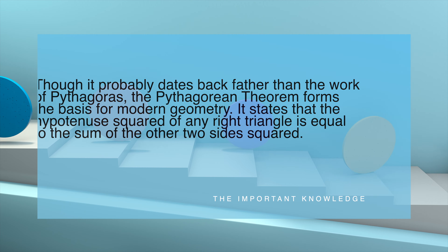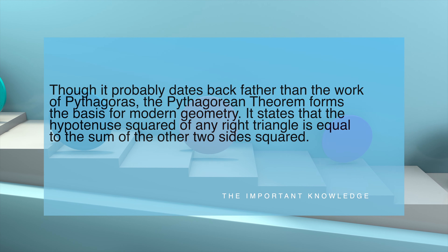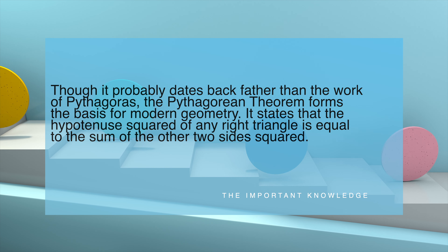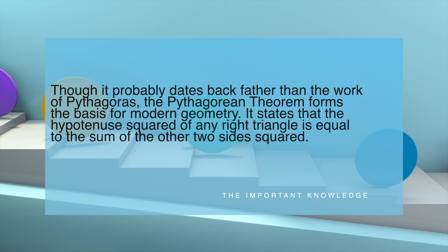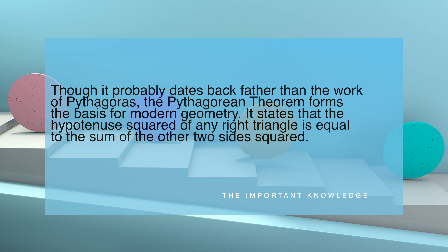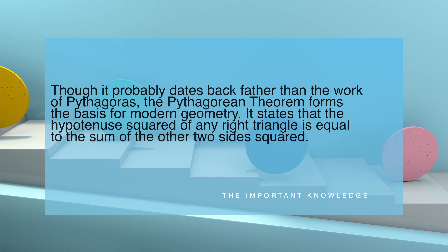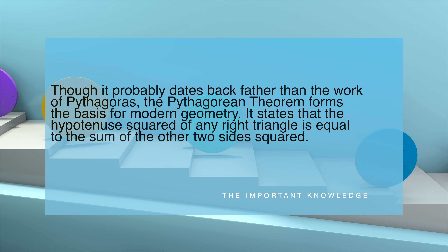Though it probably dates back farther than the work of Pythagoras, the Pythagorean theorem forms the basis for modern geometry. It states that the hypotenuse squared of any right triangle is equal to the sum of the other two sides squared.